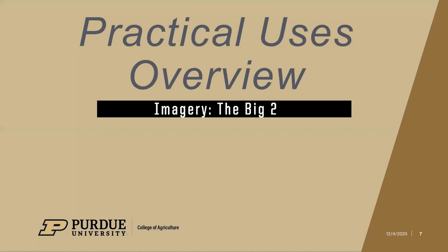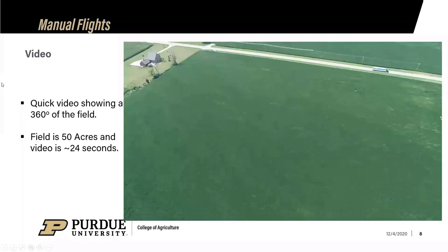Now into the practical uses. There are two big types of imagery: manual flights where you fly freehand and take pictures and video, and planned flights where you stitch an image together into a map. Manual flights have no additional software cost — it's all built in. Planned flights require additional stitching software. Most producers go with the manual approach. Here's a video showing a 360 rotation of a bean field.